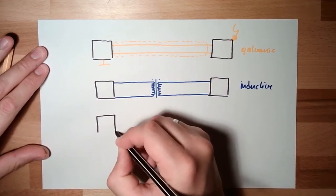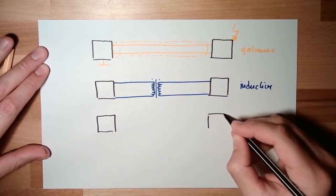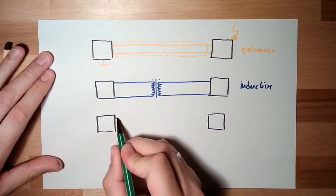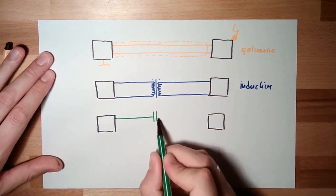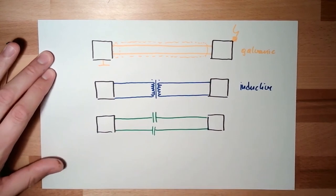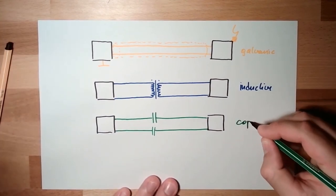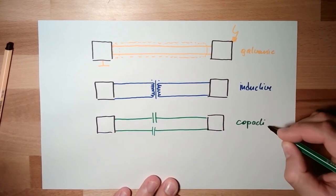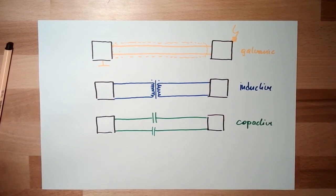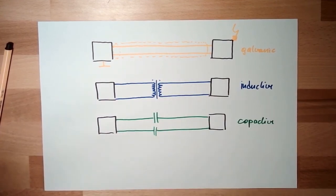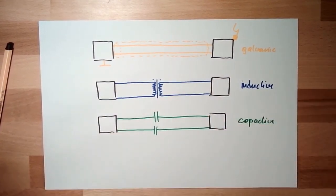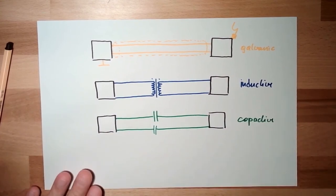Then there is capacitive coupling - using a capacitor. The capacitor provides galvanic decoupling, but alternating current can pass over it with no issue. This allows signal transmission while maintaining galvanic isolation between the two systems.